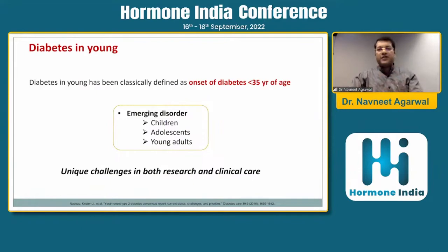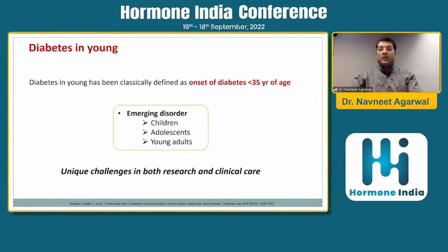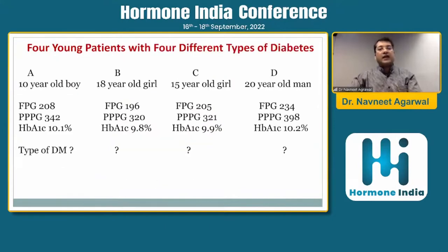As per definition, diabetes in the young is defined as onset of diabetes less than 35 years of age. This is an emerging disorder in children, adults, and young adults, and they all have unique challenges in both research as well as in clinical care.